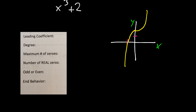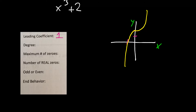Here we have our first function, x cubed plus 2, and over here is my approximate graph. We can look at the function and answer some properties right away, such as the leading coefficient. The leading coefficient is the coefficient in front of the highest exponent — since there's nothing in front of x to the third, our leading coefficient is 1. The degree is the highest exponent, which happens to be 3, so our degree is 3.